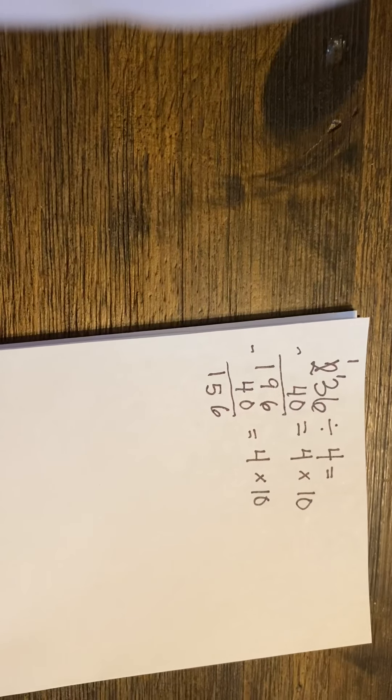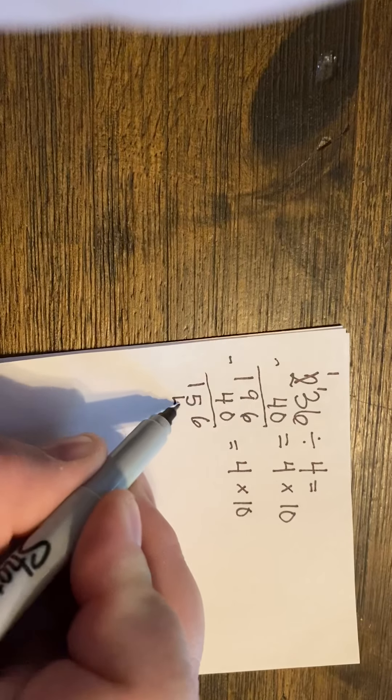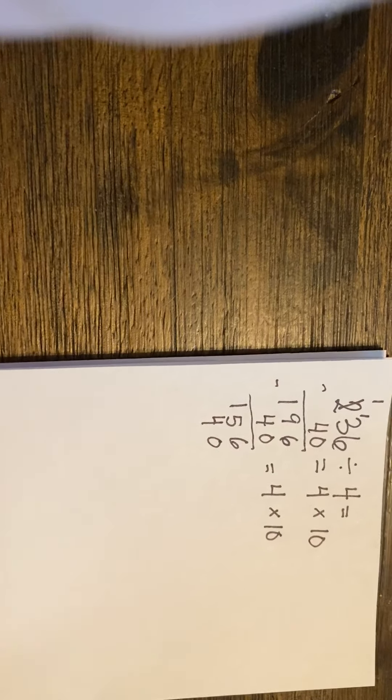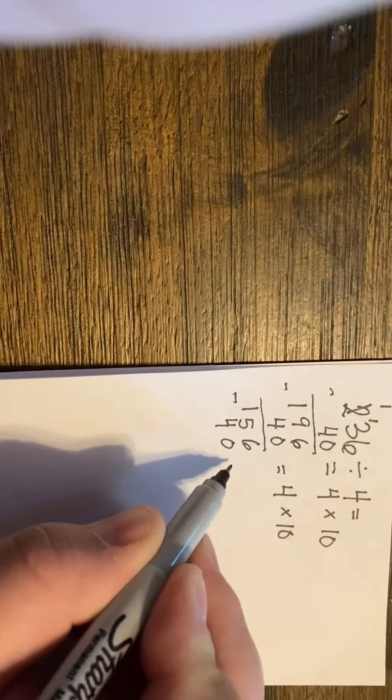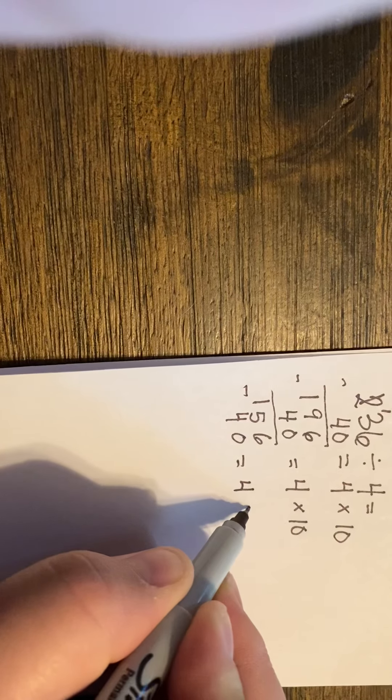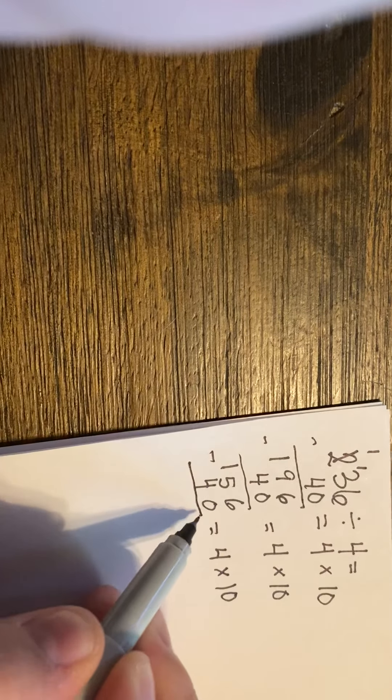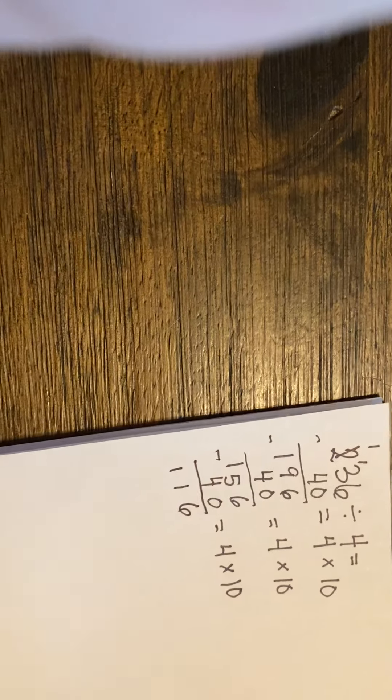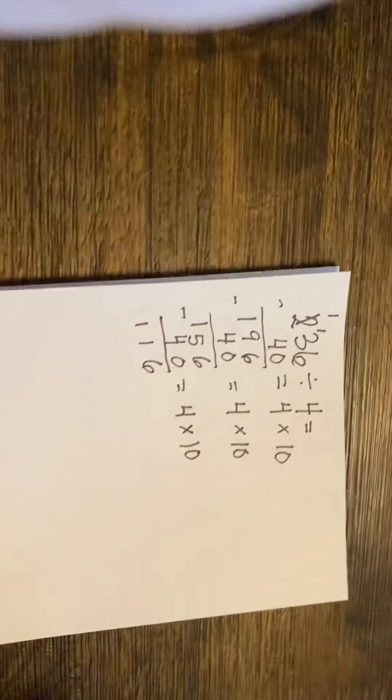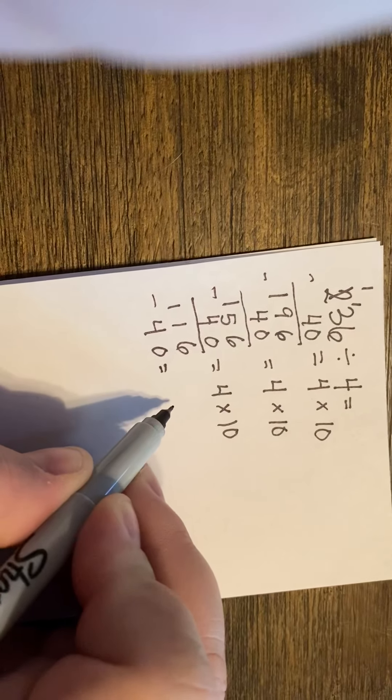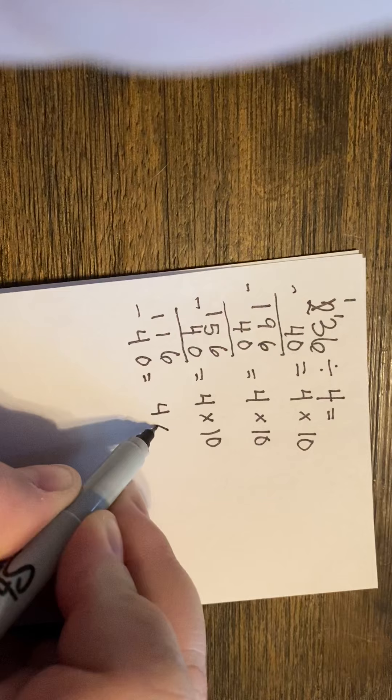And we just keep doing this until it is either less than 4 or 0. So let's subtract this, because we know that 40 is 4 times 10. And this would be 116. And then we subtract another 40, because we're not at 0 or under 4 yet. So 4 times 10.